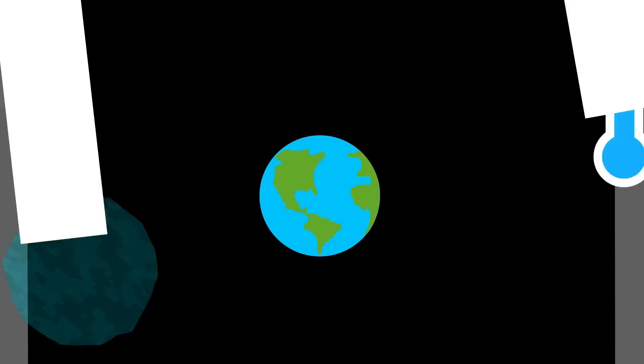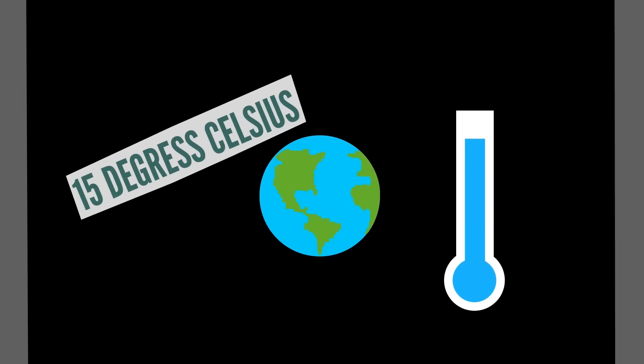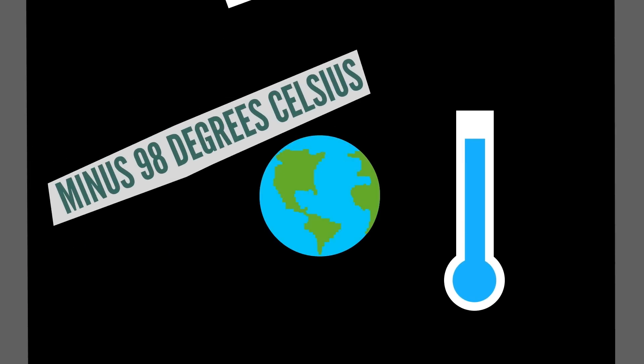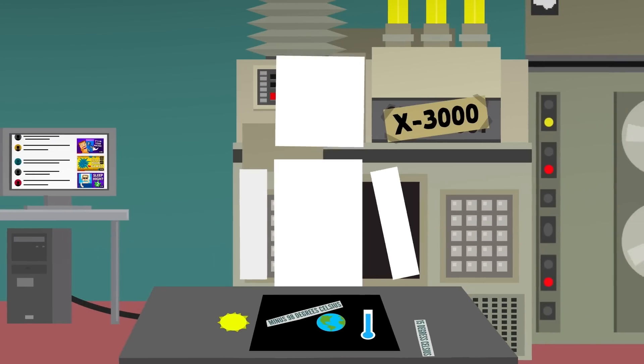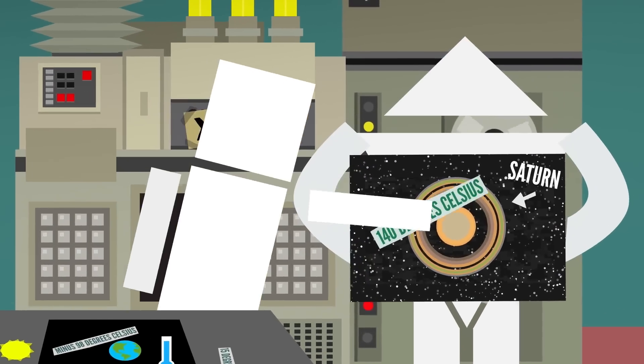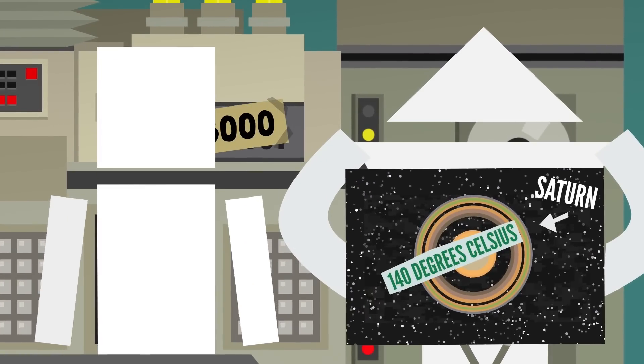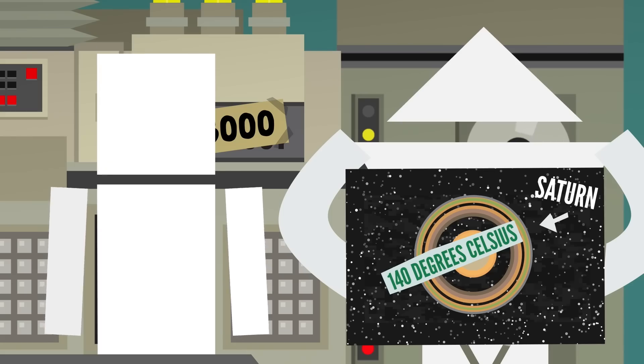Where Earth is now, the average temperature is 15 degrees Celsius, and the coldest it gets is minus 98 degrees Celsius, and that's only for a short period of time. While at Saturn's current location, the average temperature is negative 140 degrees Celsius, so that's a pretty big difference.